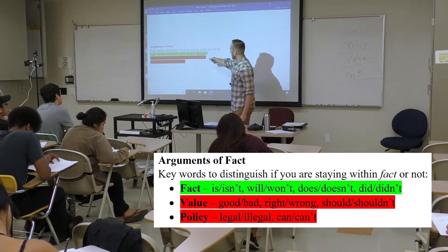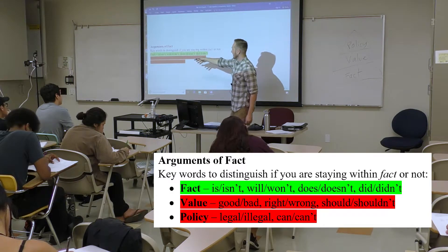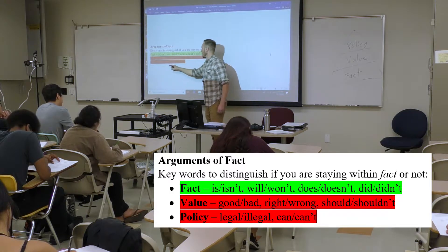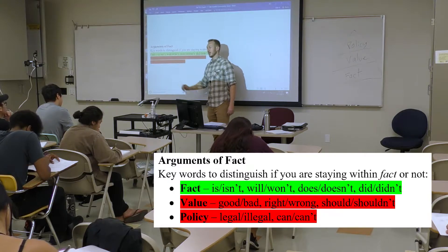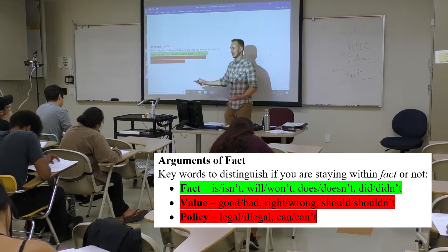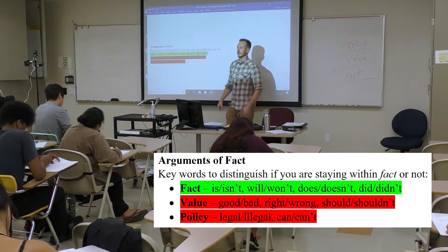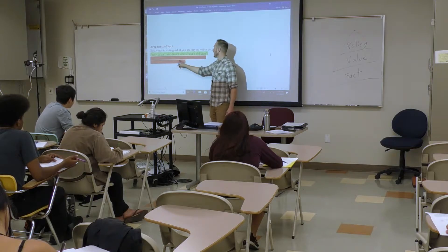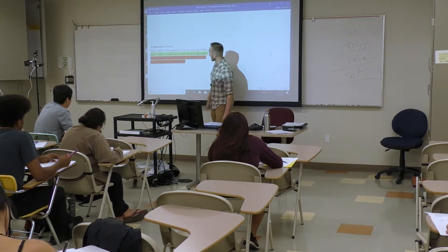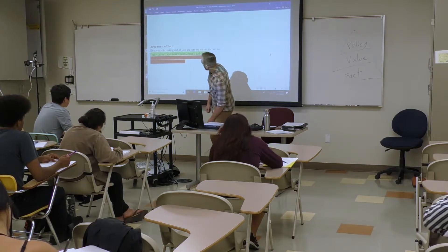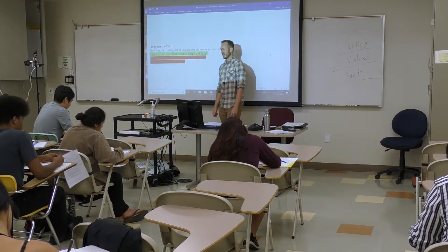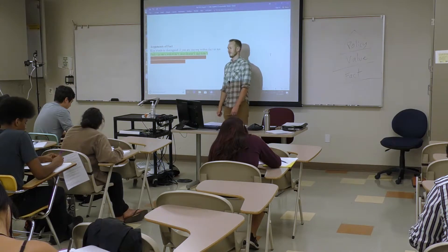Good, bad, right, wrong, should, shouldn't — and then once you get to policy, it is legal or illegal, can or can't do it because it's legal or illegal, and we're trying to push that. These are in red, and this is green — it's supposed to be green; I don't know why it looks kind of yellow from there.